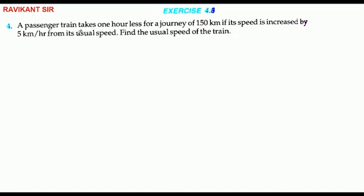A passenger train takes one hour less for a journey of 150 km if the speed is increased by 5 km per hour from its usual speed. Find the usual speed of the train.